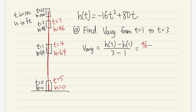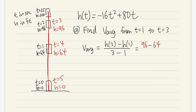We then subtract h(1) which is 64. If the values weren't given, you'd just plug 3 into h: h(3) = -16(3²) + 80(3), which gives the same answer. On the bottom we have 3 minus 1, which is 2. On top we have 32, and 32 divided by 2 gives us 16. The unit is feet per second, because the top is position in feet and the bottom is time in seconds. This is really just the slope formula: y₂ minus y₁ over x₂ minus x₁.